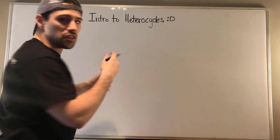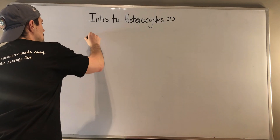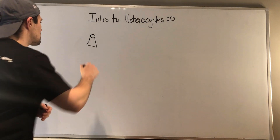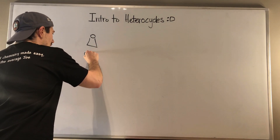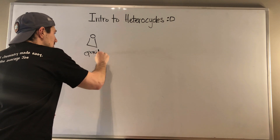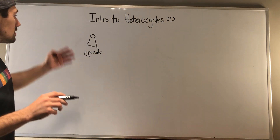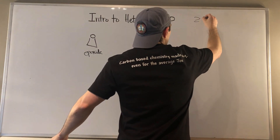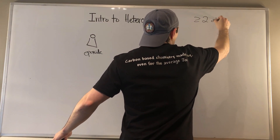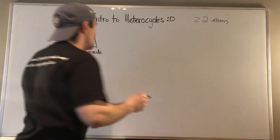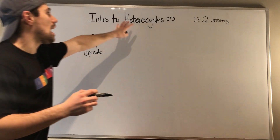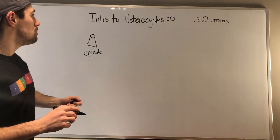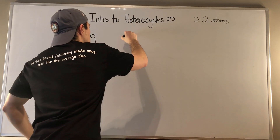I'm just gonna throw up some examples of heterocycles. A long time ago we worked with epoxides — we attacked them in basic and acidic conditions. That qualifies because it's a ring and there are greater than or equal to two different atoms in the structure. That's what defines a heterocycle — carbon and oxygen, so that's greater than or equal to two.